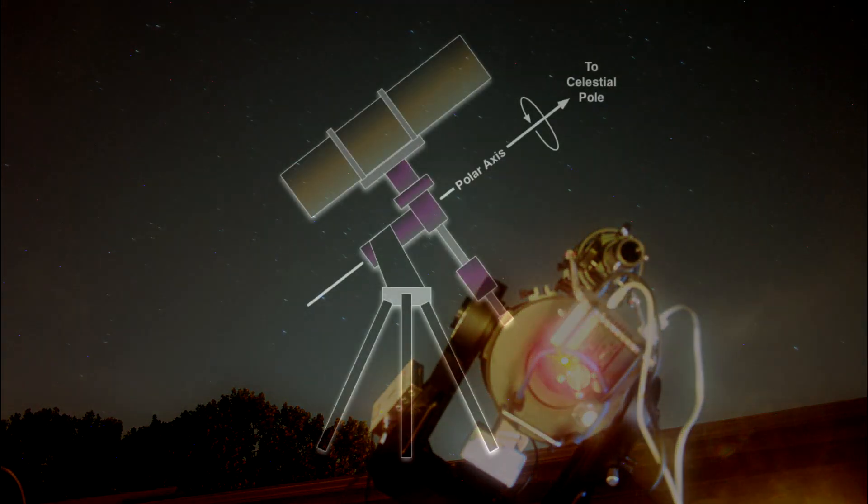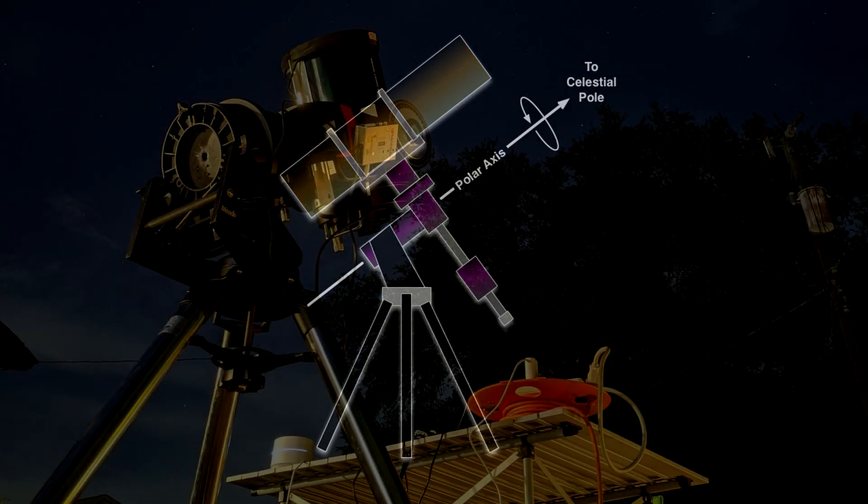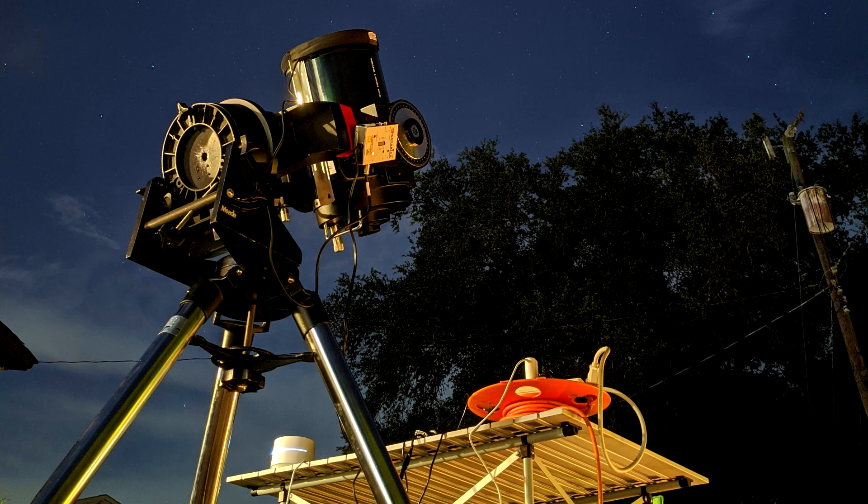The equatorial mount works by aligning the rotational axis of the mount parallel to the axis of our planet, meaning the axis of rotation on the mount is aligned with the celestial pole in the sky. This mount works so well that it's used by astrophotographers.